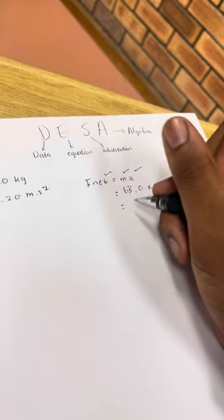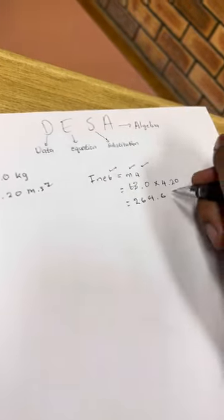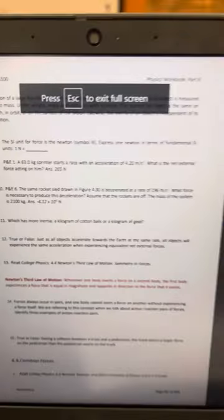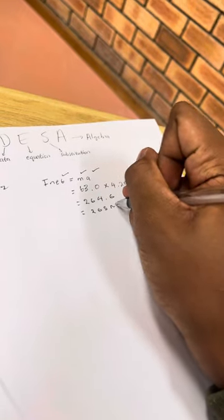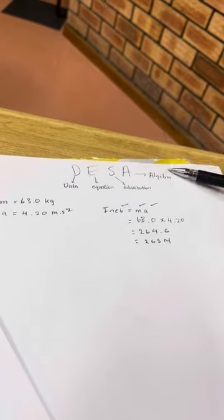So if you punch that in the calculator, you get 264.6. But if you can see here, the answer is correct, but they rounded it off to 265 newtons. So that is how you do the DESA study method.